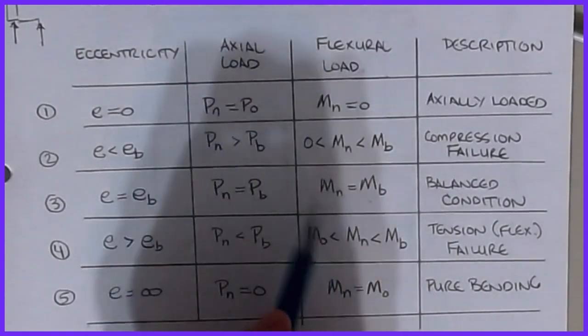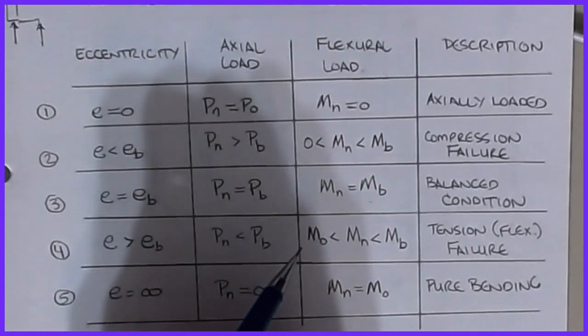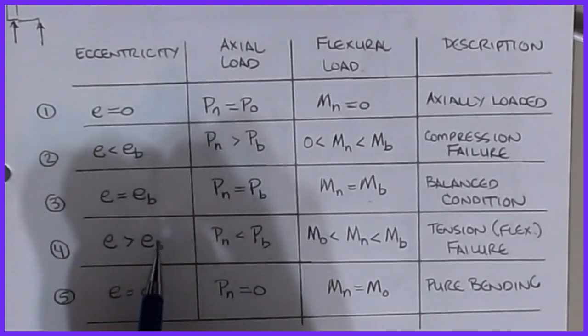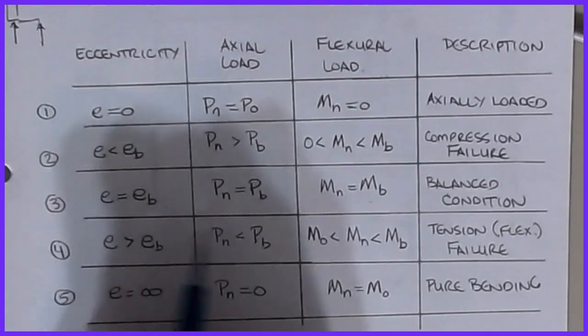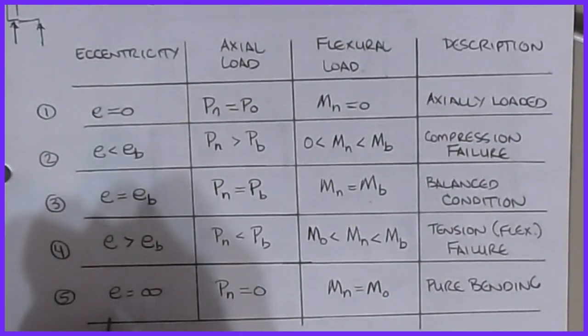This will be the point at which the steel yields and the compression fails at the exact same instant. You've seen that before in flexure when we're talking about ρ, the reinforcement ratio and the balanced reinforcement ratio. You've kind of seen that before.